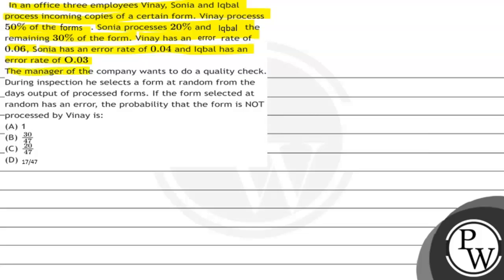The manager of the company wants to do a quality check. During the inspection, he selects a form at random from the day's output of the processed forms. If the form selected at random has an error, then the probability that the form is not processed by Vinay is what we have to find. There are four options given in this question, and after finding the probability we check which option is satisfied.